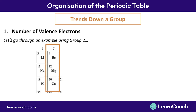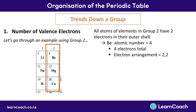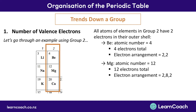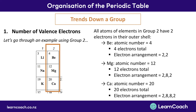Let's go through an example using group 2. All atoms of elements in group 2 must have two electrons in their outermost shell. Beryllium is at the top of group 2 with an atomic number of 4, giving it an electron arrangement of 2, 2. Moving down, magnesium has an atomic number of 12 and an arrangement of 2, 8, 2. Calcium has an atomic number of 20 and an arrangement of 2, 8, 8, 2. All group 2 elements have two electrons in their outer valence shell.